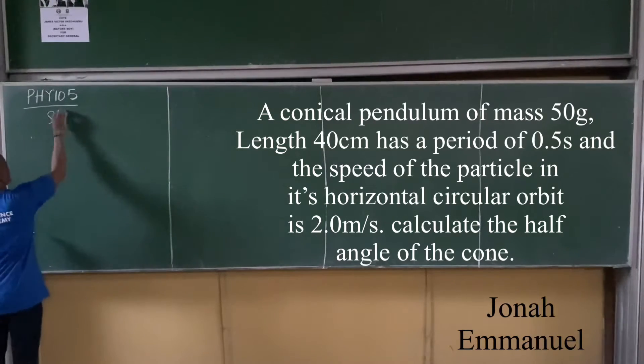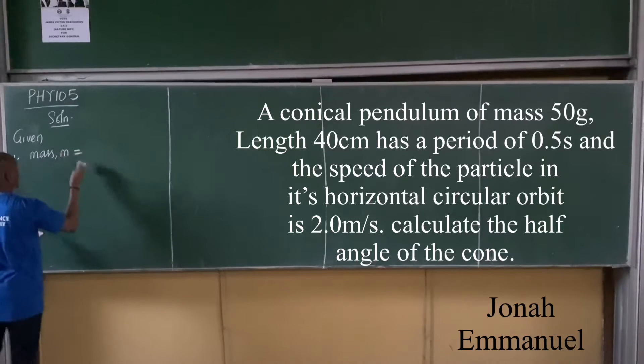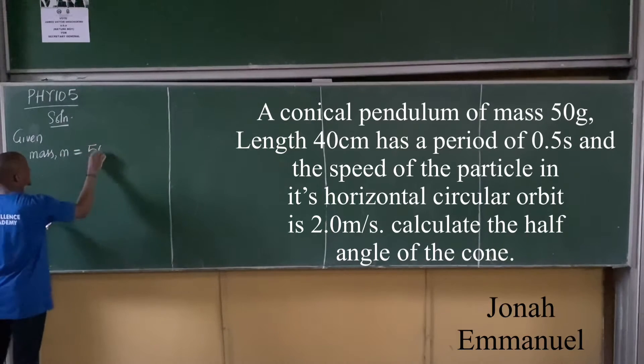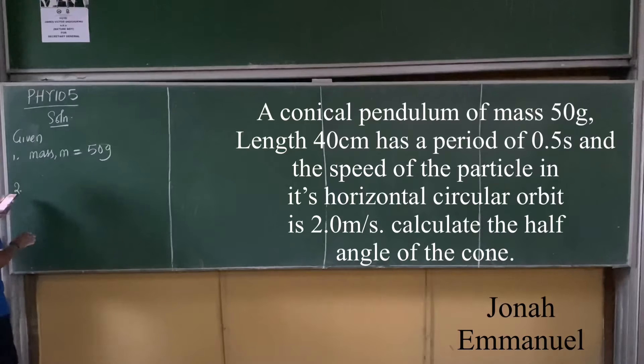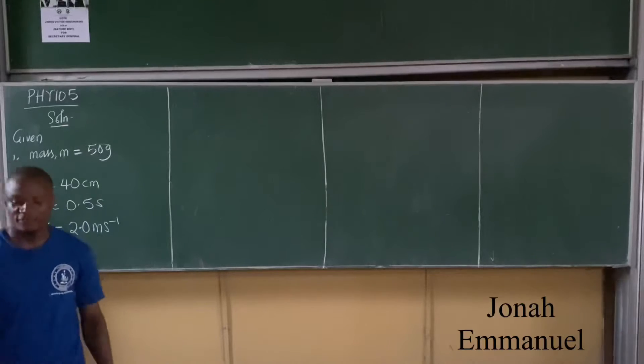Please help me list out the given. Mass: I'm given mass, how much? 50 grams. What else? Length: 40 cm. What else? Period T is 0.5 seconds. What again? Speed, velocity V equal to 2.0 m/s. You have to find half angle.